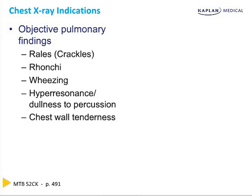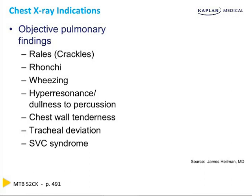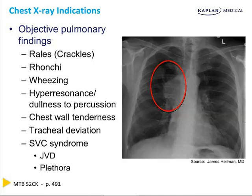Chest wall tenderness may be a result of a rib fracture. Tracheal deviation is strongly associated with tension pneumothorax, an emerging condition that must be quickly diagnosed via X-ray and treated. Finally, superior vena cava syndrome occurs as a result of compression of the superior vena cava by a tumor or mass lesion, leading to the backing up of blood flow into the neck veins and head, causing jugular venous distension and plethora, respectively. The chest X-ray shown to the right displays a large tumor in the right thoracic cavity that is compressing the superior vena cava. If you are asked about the next step in the management of a patient presenting with any of these conditions, you should immediately order a chest X-ray, which can provide key diagnostic clues.